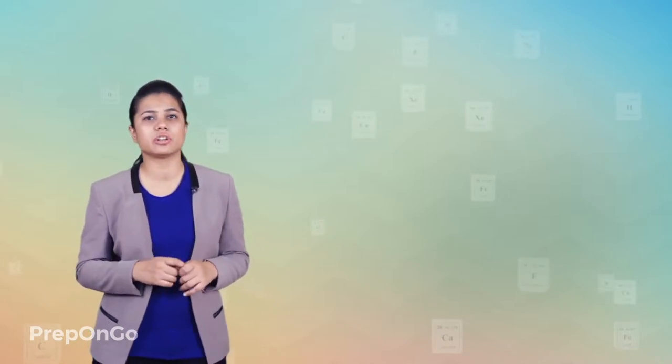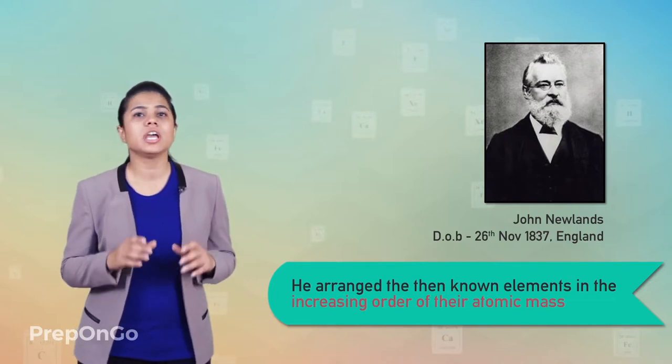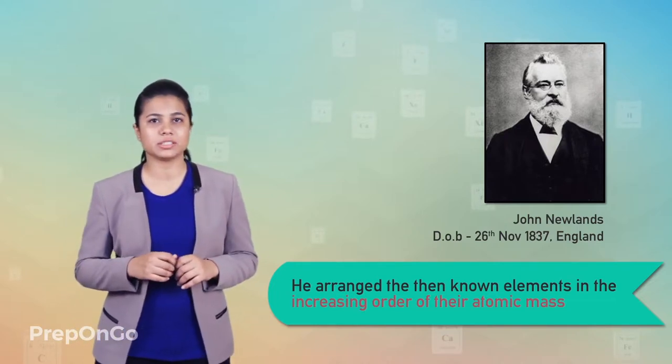Let's move ahead and study about the work of another scientist in the field of classification of elements. John Newland, an English chemist, arranged the then-known elements, which were 56 to be specific, in the increasing order of the atomic masses.